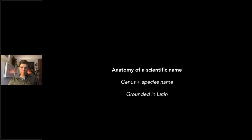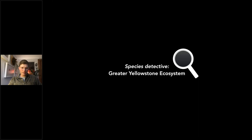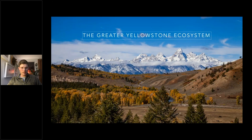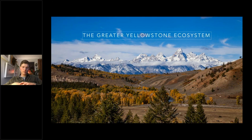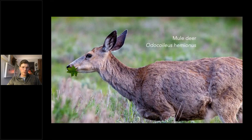Let's dive into Species Detective, starting in the Greater Yellowstone Ecosystem, where Natural Habitat Adventures leads a trip from Grand Teton through Yellowstone up to Bozeman. This region is expansive and mountainous in the western United States, and one creature that calls it home is the mule deer. Its species name is Odocoileus hemionus.